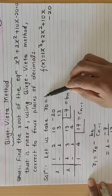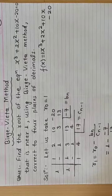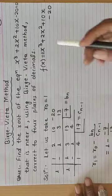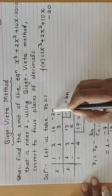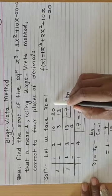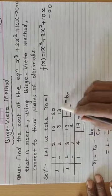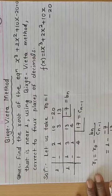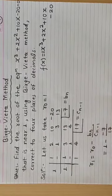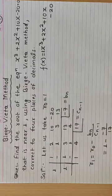In every question you take R0 = 1 to begin. The coefficients are 1, 2, 10, −20. We will divide using synthetic division — in Hindi we call this synthetic division. You divide from R0, which is 1.